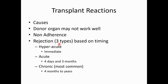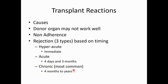Rejection is based on timing, and there are three timeframes. Hyperacute is an immediate response — basically the organ never got perfused, became necrotic, and never worked. Acute is fairly common, occurring four days to three months out. Chronic is the most common, from four months to a year, and non-adherence to medications years out will certainly contribute to transplant rejection.